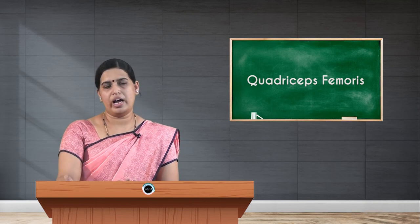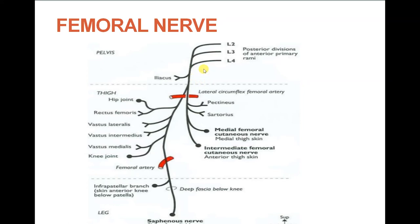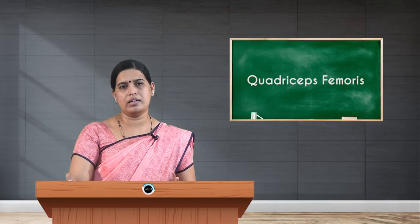The main nerve supply for the quadriceps femoris muscle comes from the posterior division of the femoral nerve. The femoral nerve arises from the dorsal divisions of the ventral rami of L2, L3, and L4 lumbar nerves. As it reaches the upper part of the thigh, it crosses the lateral circumflex femoral artery from the profunda femoris artery, after which it divides into an anterior division and a posterior division. The posterior division is the largest and supplies all four muscle fibers of quadriceps femoris: rectus femoris, vastus lateralis, vastus medialis, and vastus intermedius.